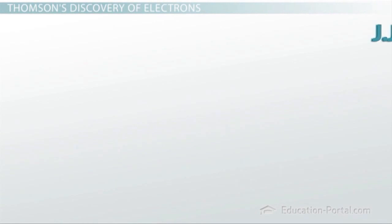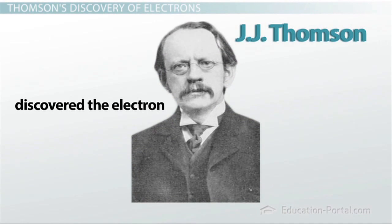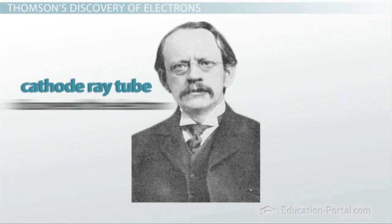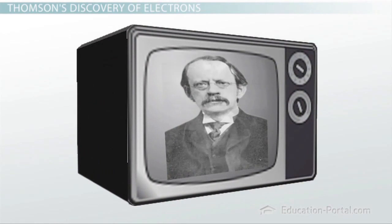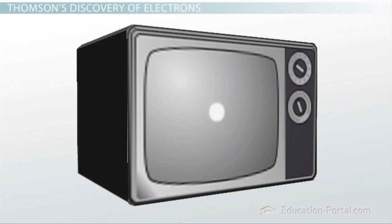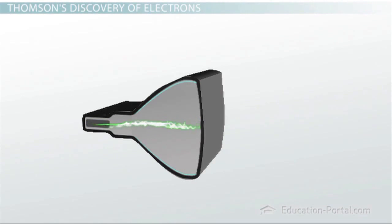Now let's fast forward to the late 1800s, when J.J. Thomson discovered the electron. Thomson used what was called a cathode ray tube, or an electron gun. You've probably seen a cathode ray tube without even knowing it — they are the bulky electronic parts of old television sets. Thomson used the cathode ray tube with a magnet and discovered that the green beam it produced was made up of negatively charged material.